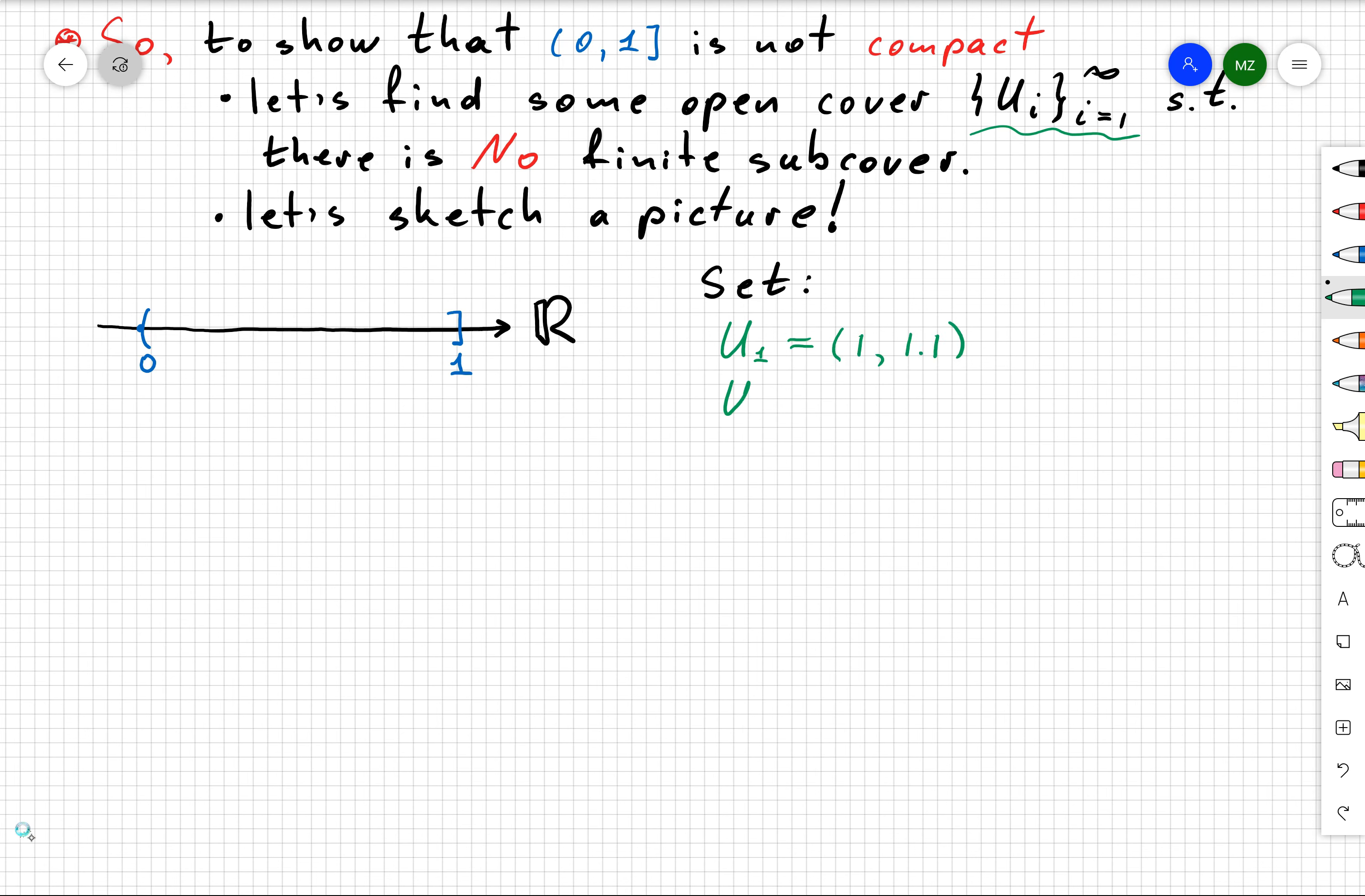I will say that U1 is the open interval from 1 to 1.1, then U2 from 1/2 to 1.1, and you can guess that Un is from 1/n to 1.1. If I sketch my open intervals Ui, you can see the following picture.